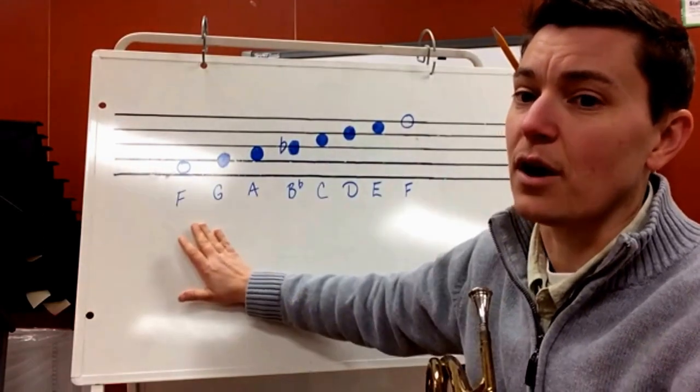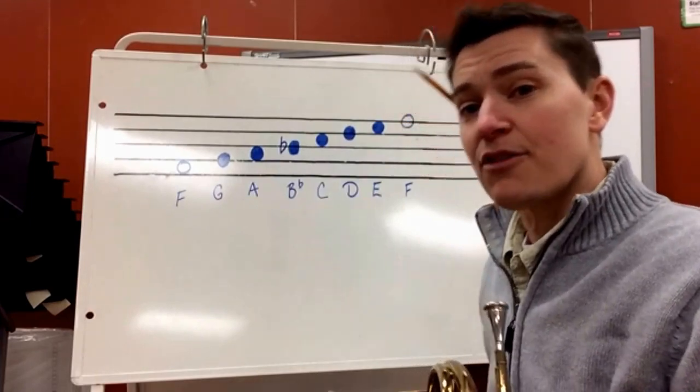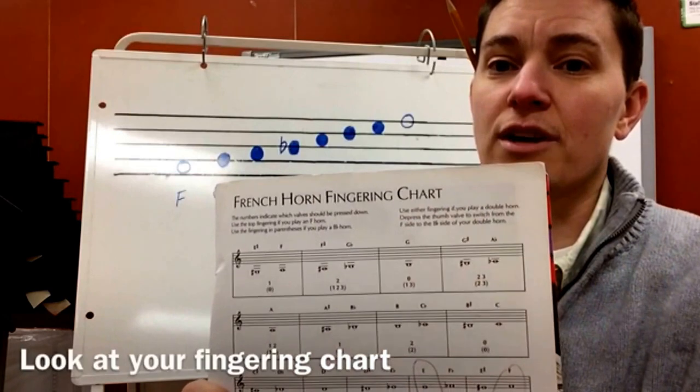Your scale goes from F to high F. In the back of your book, on the inside of the back cover, is the French horn fingering chart.